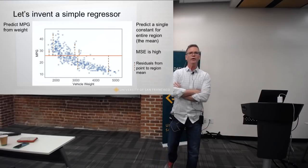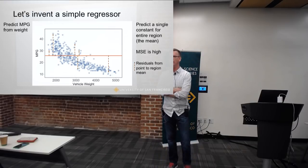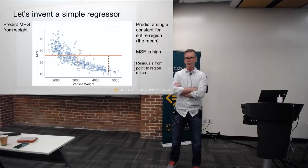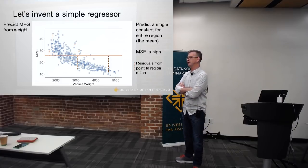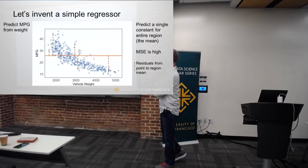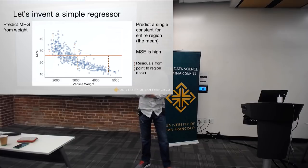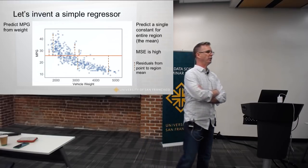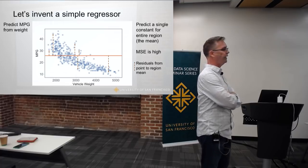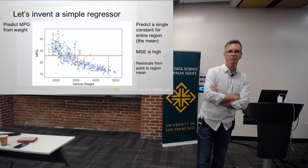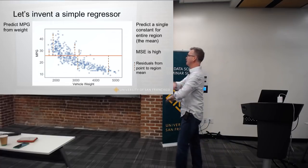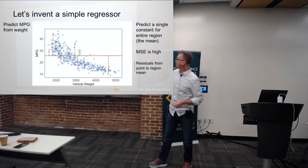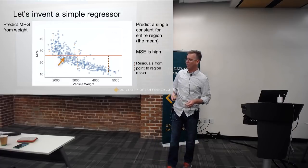I've always felt that the best way to learn a new technique or algorithm is to reinvent it. So what I'd like to do is reinvent decision trees before your very eyes. We're going to play a little game: we're going to build a regressor, but you can only use horizontal lines — in fact, only one of them. So we're going to get kind of a crappy approximation here.